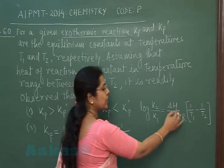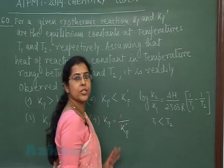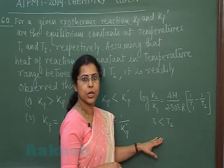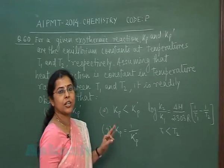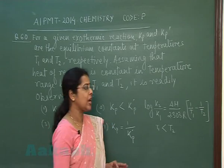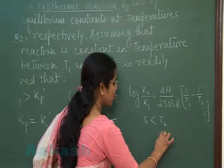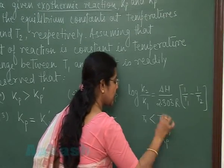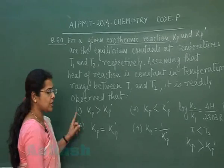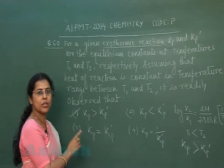If we assume T1 is the lower temperature and T2 is the higher temperature, then the equilibrium constant must be affected by temperature. In this question, the given reaction is exothermic, so the sign of ΔH is negative. For any exothermic reaction, if temperature is increased, Kp' will be less than Kp. The first option, Kp is greater than Kp', is the correct answer.